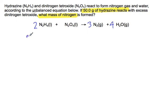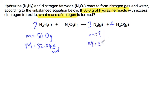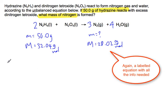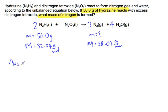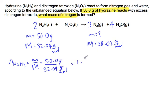I can label my equation. I'm given a mass of hydrazine — 50.0 grams. The molar mass of hydrazine is 32.04 grams per mole. I'm looking for a mass of nitrogen, and the molar mass of nitrogen (N₂) is 28.02 grams per mole. Step 1: number of moles of hydrazine equals mass divided by molar mass — 50.0 g ÷ 32.04 g/mol = 1.5605 moles of hydrazine.